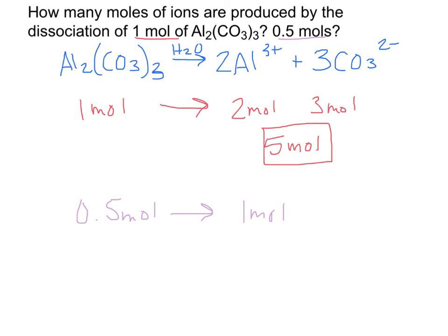It's the same with carbonate. We started with half the amount of aluminum carbonate, so we should end up with half the amount of carbonate ions, which would be 1.5 moles. The question asks how many moles total are produced. You add them up and that gives you 2.5 moles.